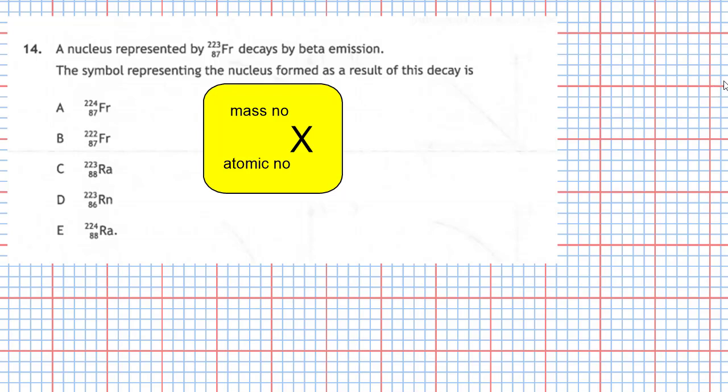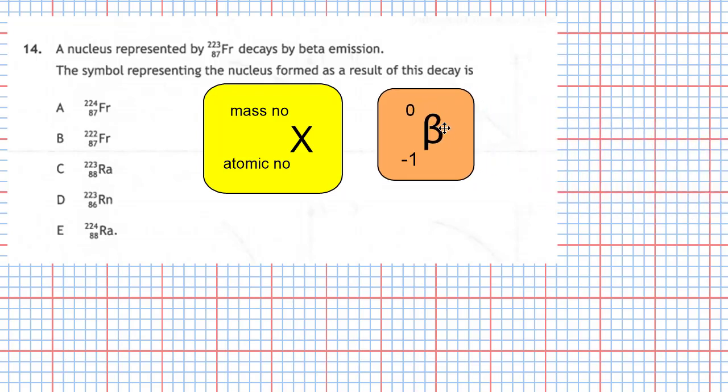For a beta particle, a beta particle has no mass number, and it has an atomic number of minus one, because it's really a fast-moving electron.